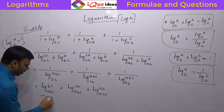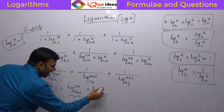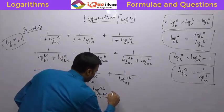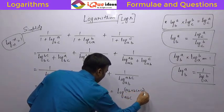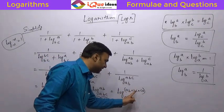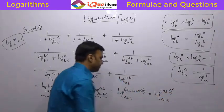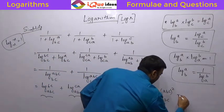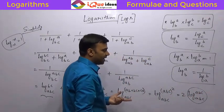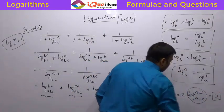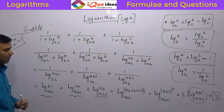Now these three logs all have the same base ABC, so the numbers inside — BC, CA, and AB — get multiplied together. We get log of (AB into BC into CA) to the base ABC. Now AB into BC into CA equals A squared B squared C squared, which is (ABC) squared. So we have log of ABC squared to the base ABC. The power 2 comes out, giving 2 times log ABC to the base ABC, which equals 2 times 1, so the final answer is 2. It is a long question but an interesting one — it is just for the sake of practice.